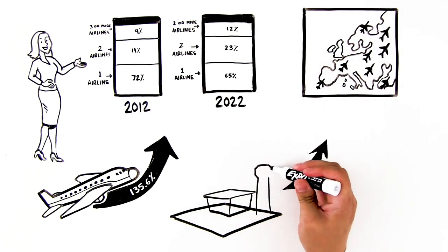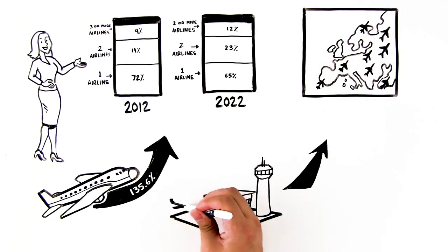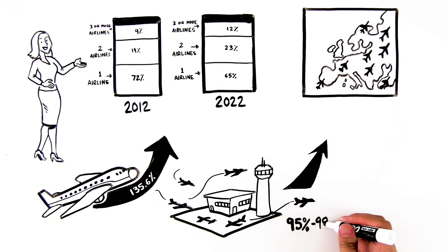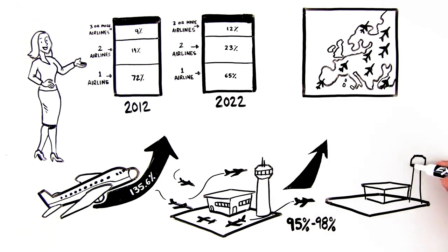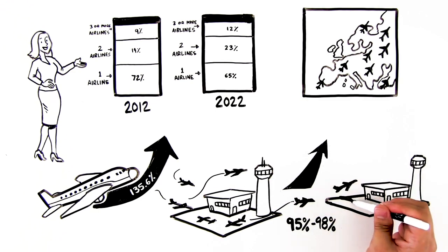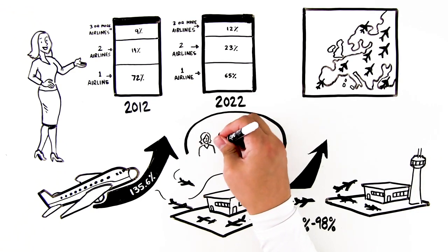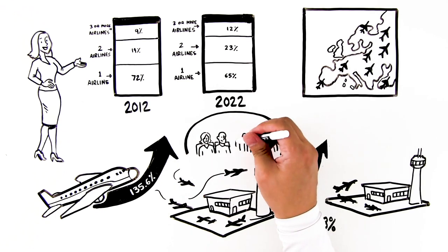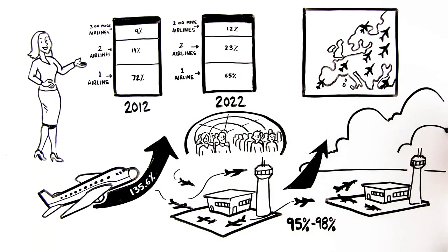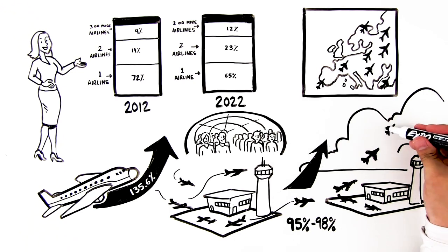And the efficiency has also strongly increased. The capacity utilization at the busiest airports is now around 95% to 98%, thanks to the discipline of the existing slot rules. And the average number of passengers per flight in the EU has risen from 95 to 121. That is helping to drive down the emissions per passenger, too.